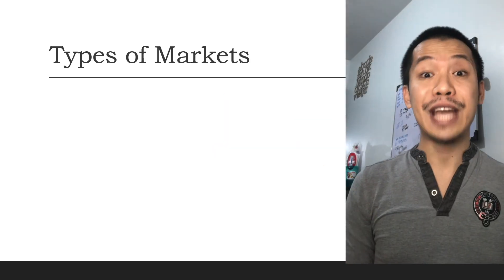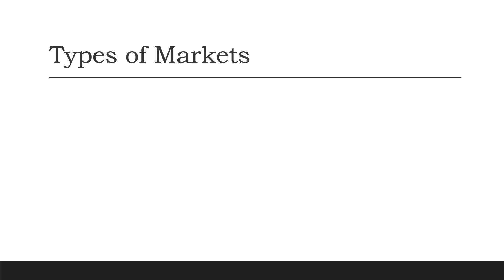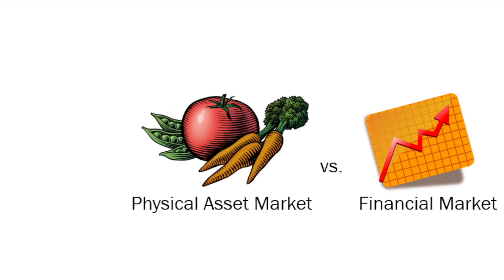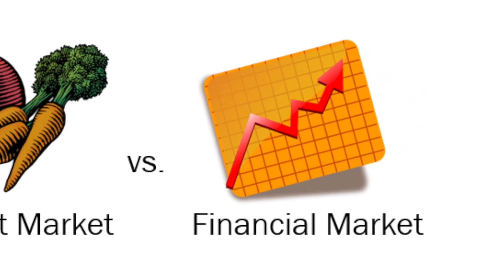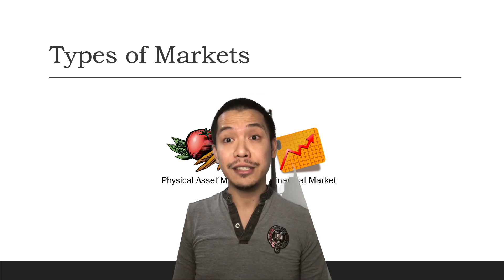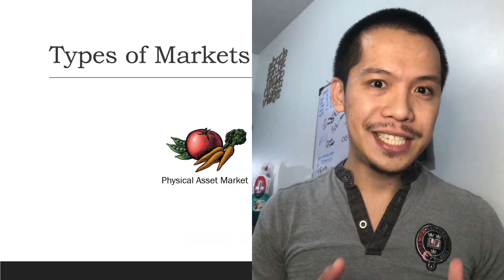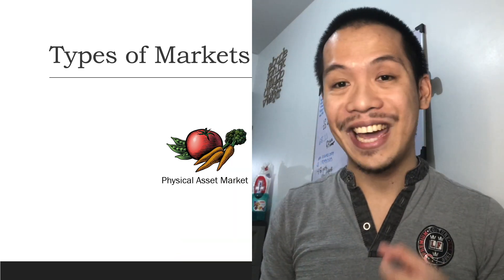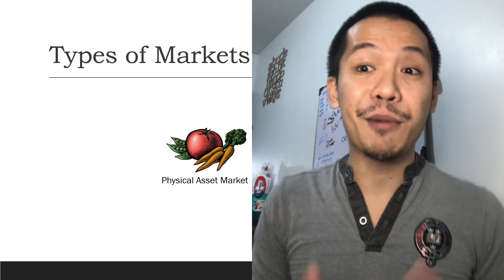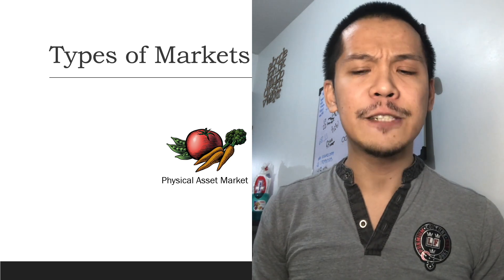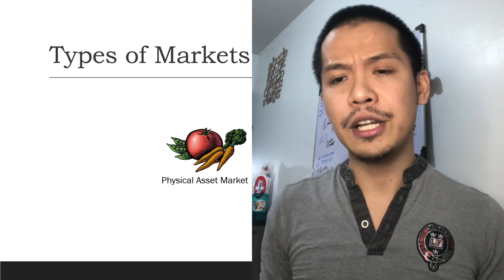Now let us talk about the types of markets. A market is a place where buyers and sellers meet to exchange goods with each other. This place may be physical, like a wet market, or virtual, like Facebook Marketplace. Let us distinguish the different types of markets. Physical asset markets are those whose object of exchange is physical, like vegetables, meat, clothes, toys, and gadgets. Financial markets are those whose object of exchange are financial instruments, like stocks, bonds, and options.